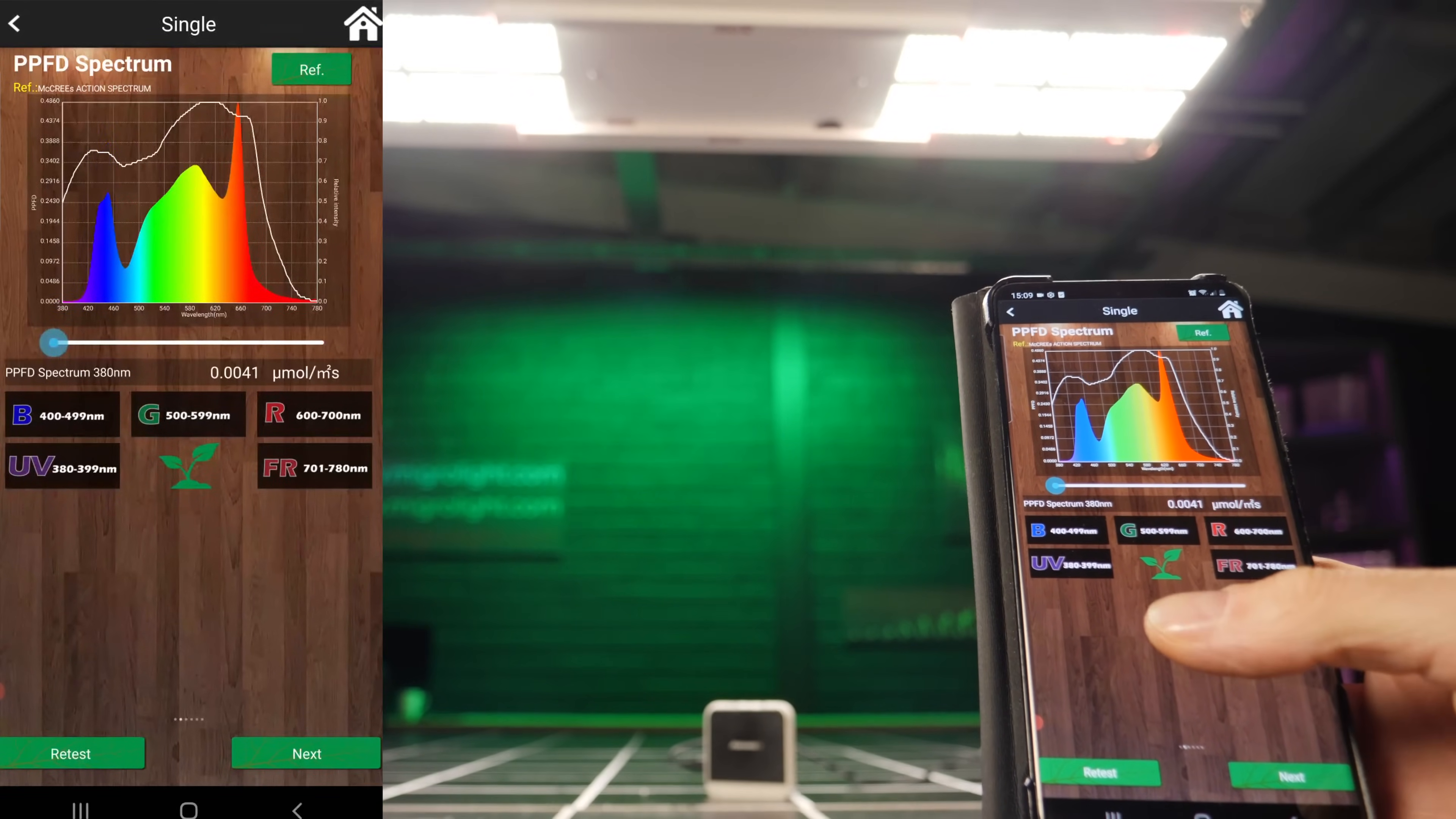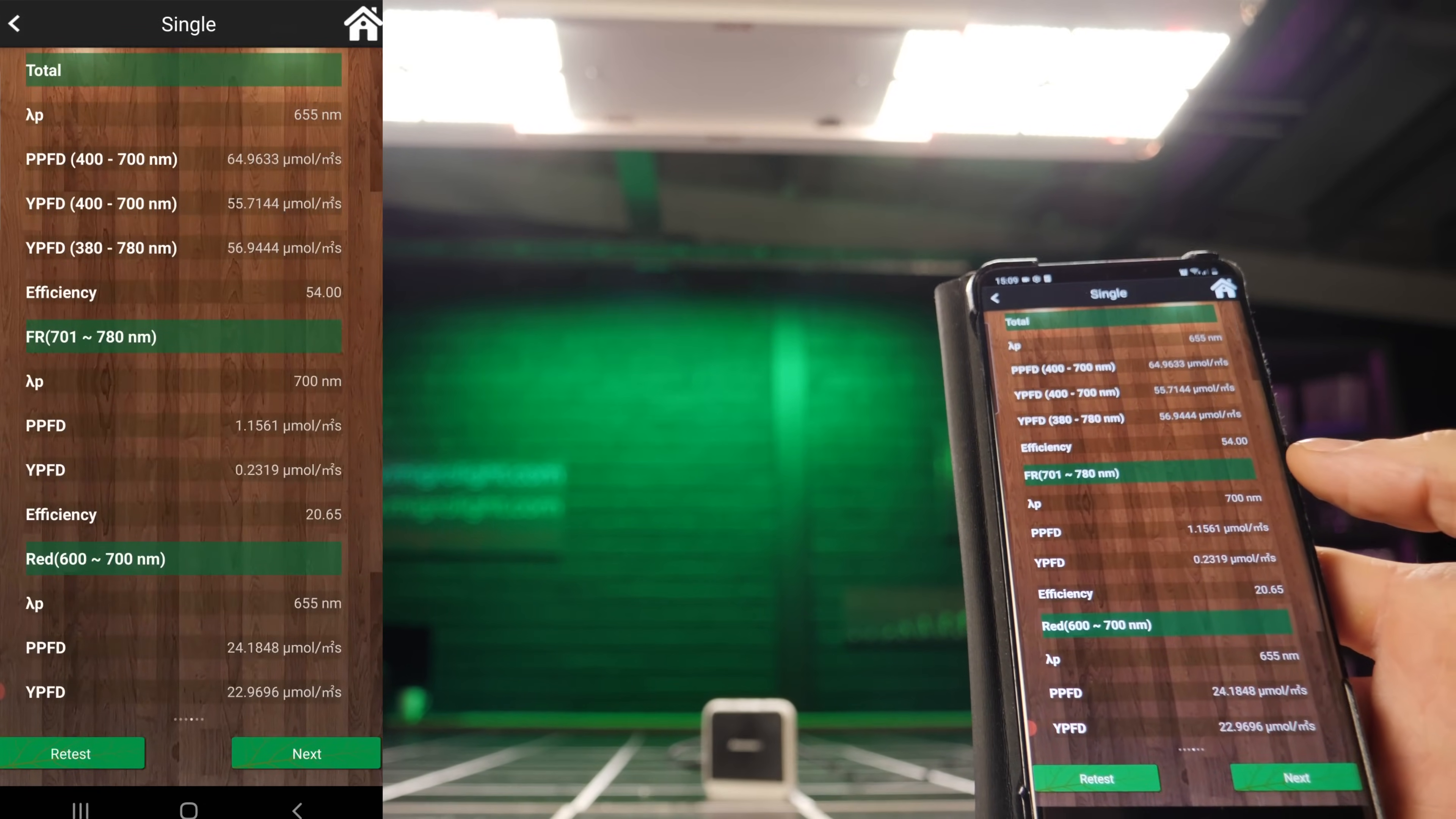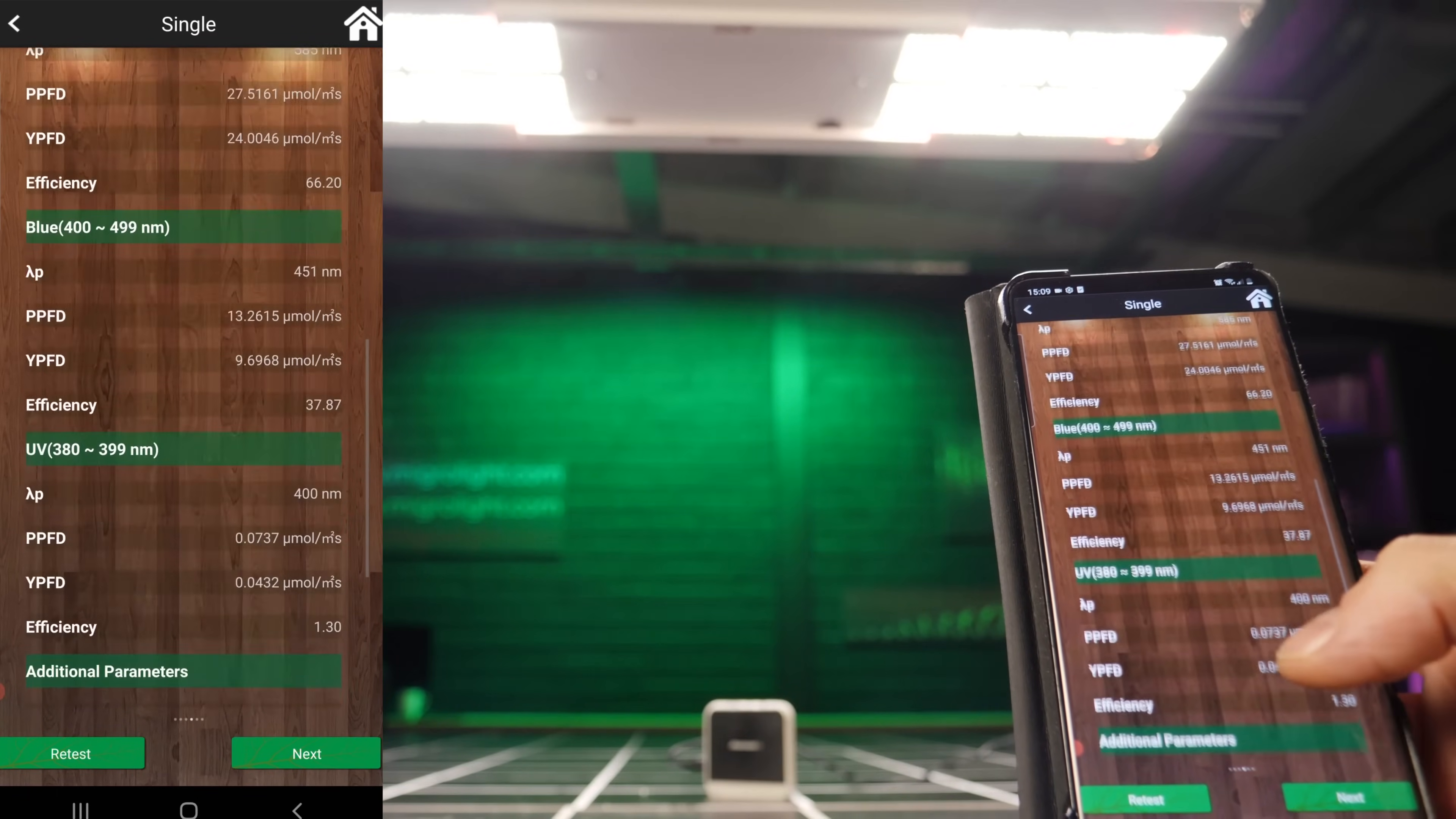Lots of blue in it for short and dense growth, and also a good amount of red for high horticultural efficiency, photosynthetic efficiency.